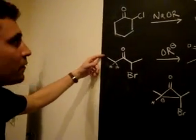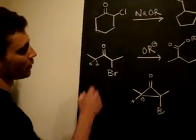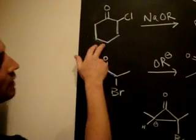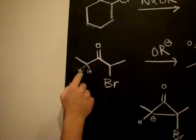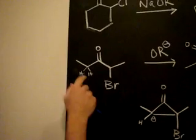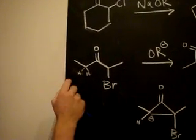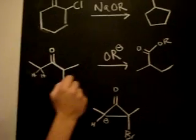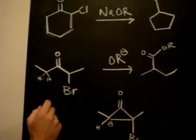So another cool thing about the Favorskii rearrangement is that it works with linear molecules as well as cyclic ones. So here we see the familiar alpha-position hydrogens. And in an alkoxide basic environment,